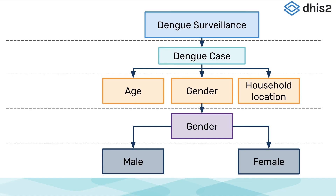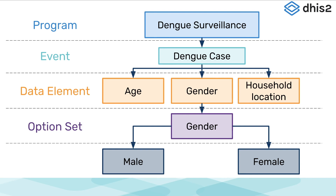To summarize, let's have one last look at the event data model as applied to the Dengue surveillance program. There are five key components of the model that we have identified: the program, events within the program, data elements within the events, option sets linked to data elements, and options that are linked to option sets. Reviewing the model, we can see examples of each item as applied to the Dengue surveillance event program.